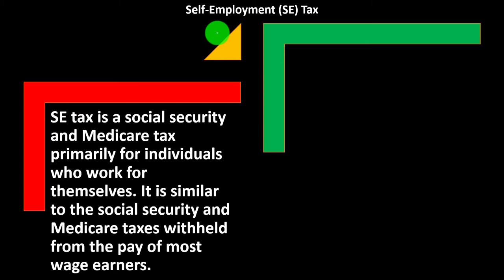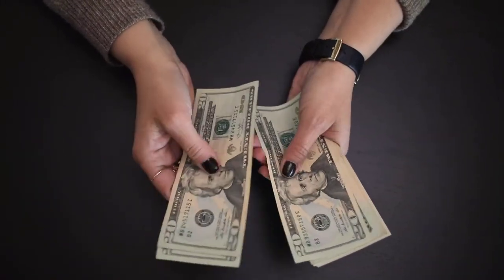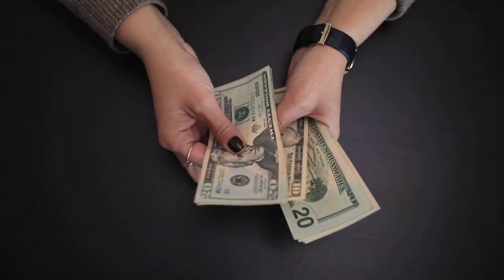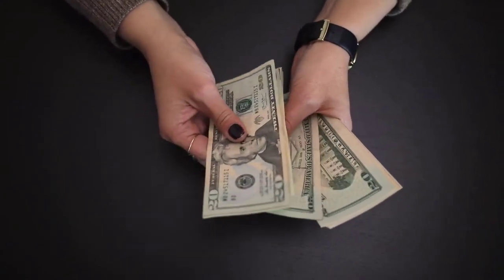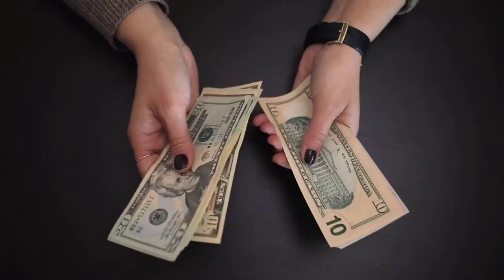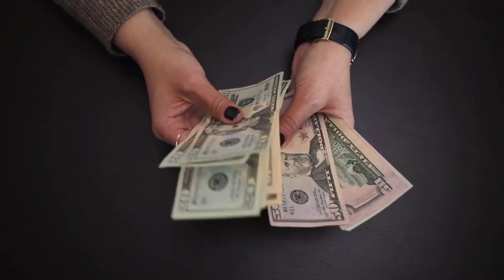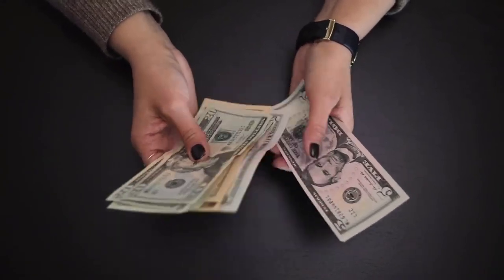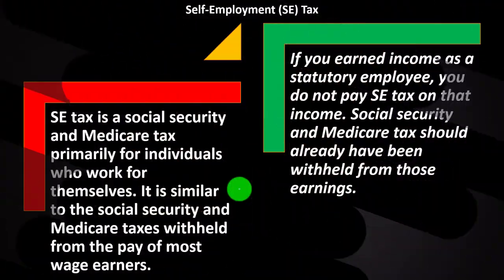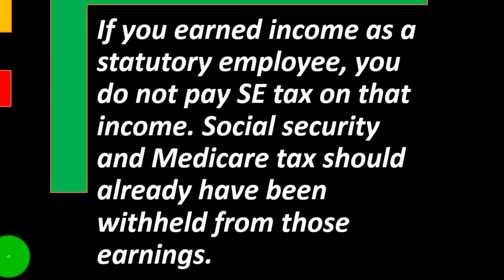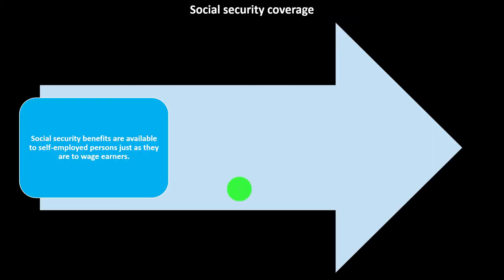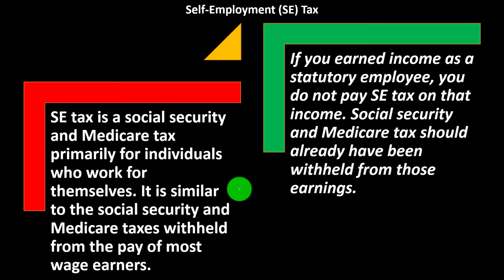However, on the downside, whatever net income you have is going to be subject to both the employee and employer portions of the self-employment tax. Whereas if you are an employee, you only have the employee portion withheld from your wages. So there's a significant difference between being an employee or being self-employed as a sole proprietorship. If you earned income as a statutory employee, you do not pay SE tax on that income — Social Security and Medicare tax should already have been withheld from those earnings.